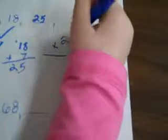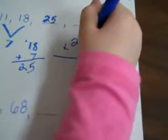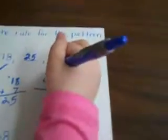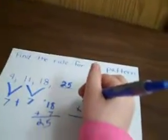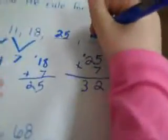And then I have to do 25 plus 7. 5 plus 7 is 12. And 1 plus 2 equals 3. So, it's 32.